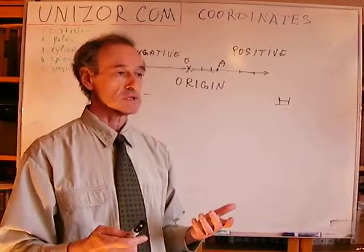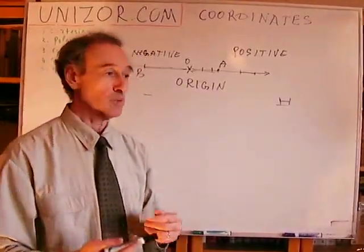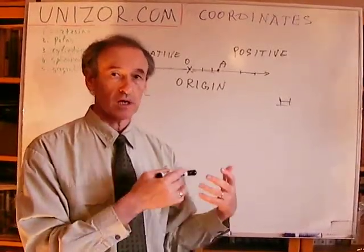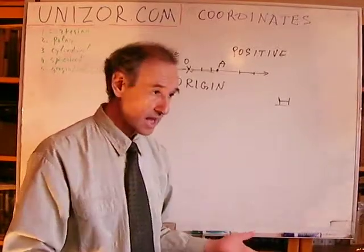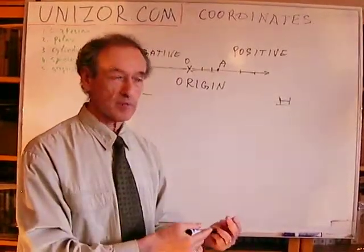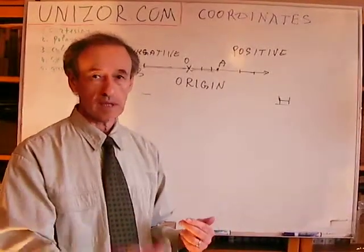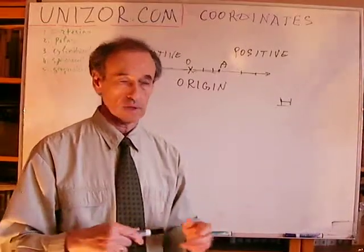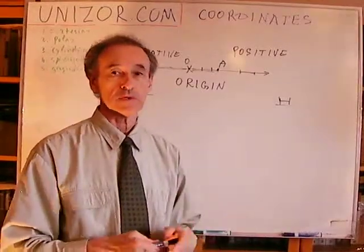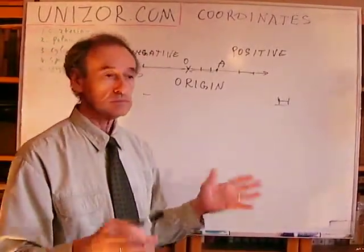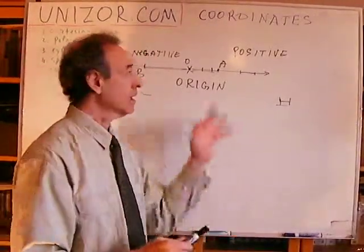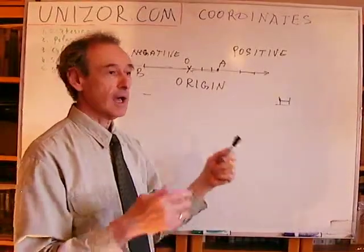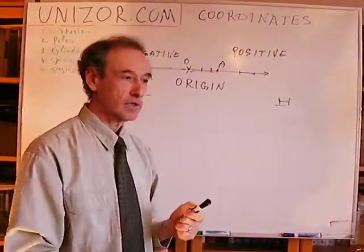Now, how can I characterize the position of a segment on the line? A segment is characterized by two points — the beginning and the end. Each point has its own coordinate, a numerical characteristic, which means the segment can be characterized as a pair of numbers: one number being one end of the segment and another number being the coordinate of the other end. So a segment is represented by a set of two coordinates. This is the Cartesian coordinate system on the line, using the origin, positive direction, and unit of measurement to numerically characterize the position of any point.